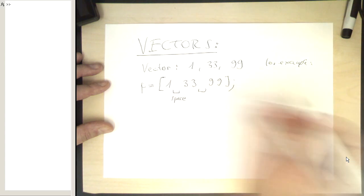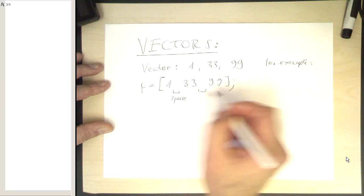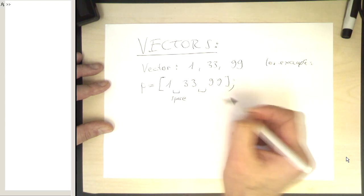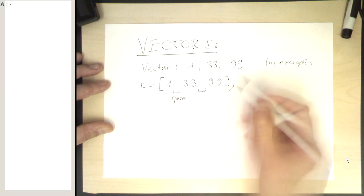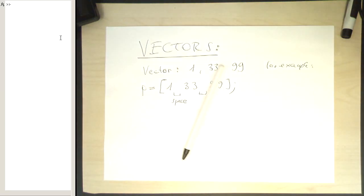Commas are also allowed to separate these elements, but usually people would use spaces for that. So let's do this. Let's create this vector. So P equals 1, 33, and 99. So note the spaces. So now we've created this vector here.